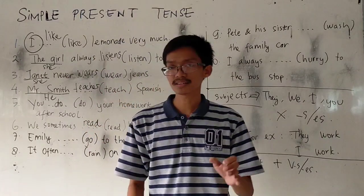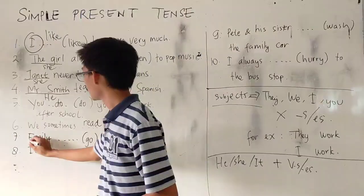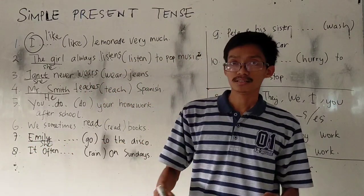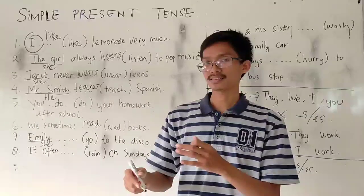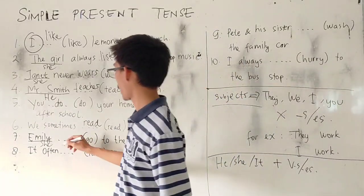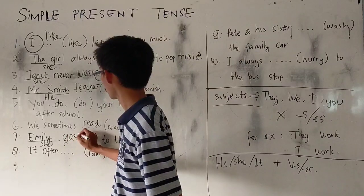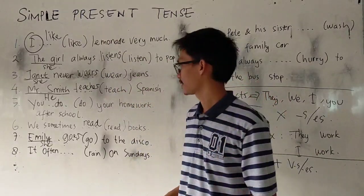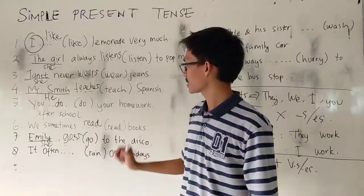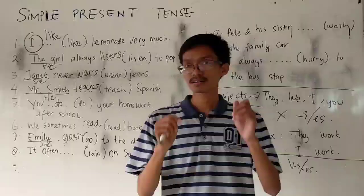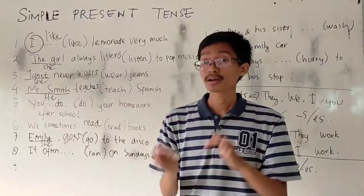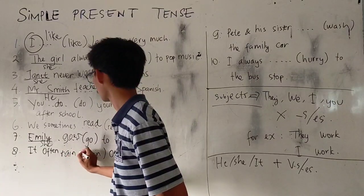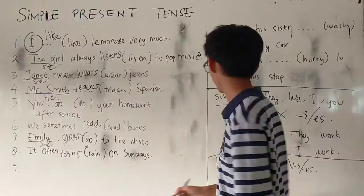Number seven: Emily — you can change it into 'she.' Emily is he/she/it, so add S or ES. Number eight: it often — rains.